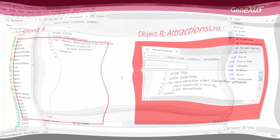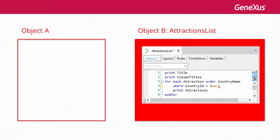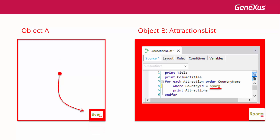Ideally, we should be able to receive in this object the value that we want to filter by. In other words, another GeneXus object should allow the user to choose that value, and then send it to this procedure object to have the attractions listed according to the country received. Next, we will use this example to see how to implement the communication between GeneXus objects.